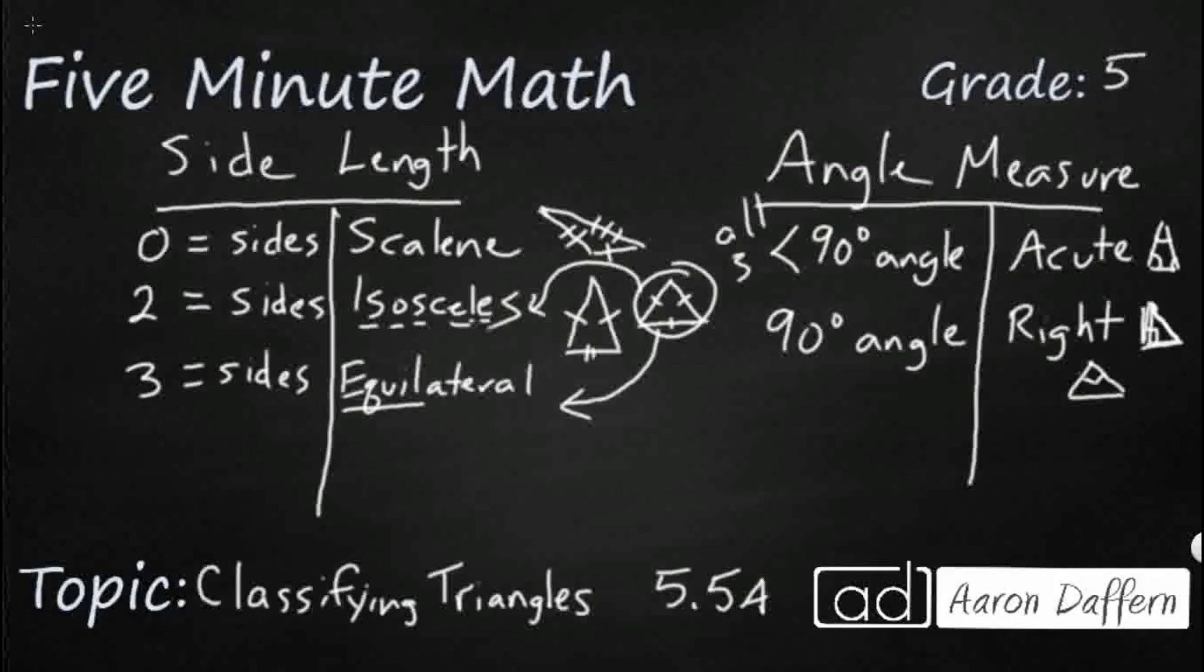They're all less than 90 degrees. So we compare everything as to whether it's equal to, less than, or greater than that right angle. So all three of these are smaller than 90 degrees, which means it's an acute triangle.